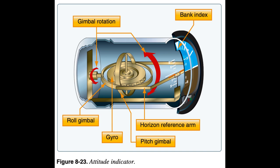The horizon bar represents the true horizon. This bar is fixed to the gyro and remains in a horizontal plane as the aircraft is pitched or banked about its lateral or longitudinal axis, indicating the attitude of the aircraft relative to the true horizon. The gyro spins in the horizontal plane and resists deflection of the rotational path. Since the gyro relies on rigidity in space, the aircraft actually rotates around the spinning gyro.